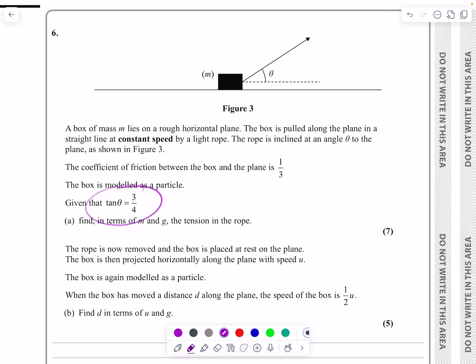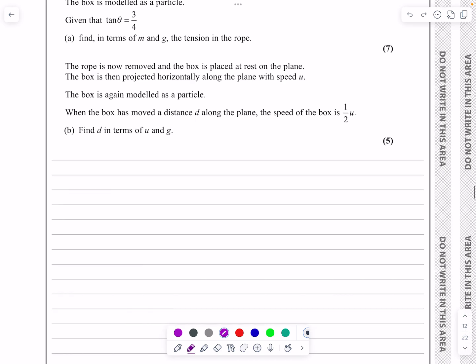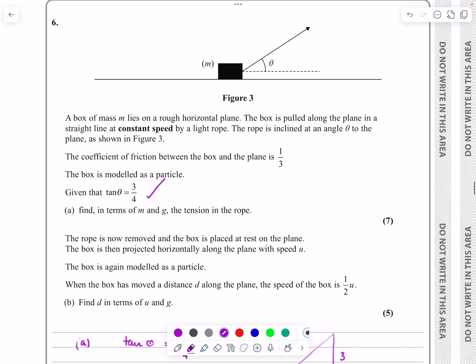It says that tan theta equals three-quarters. If you've seen any of my videos before, you'll notice that the first thing I do is sort out what that means. If tan theta equals three-quarters, we can draw a diagram. That's opposite over adjacent for this right-angled triangle, which means the hypotenuse is five. You can use Pythagoras or just learn the 3-4-5 triangle, absolutely worthwhile.